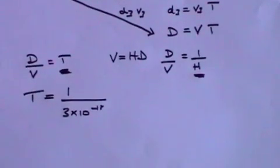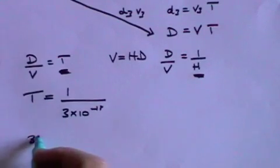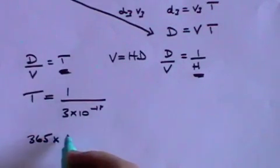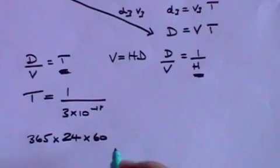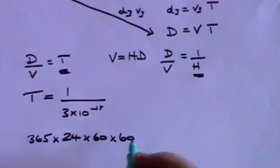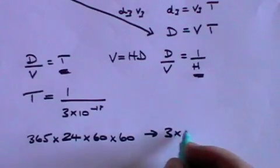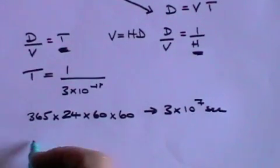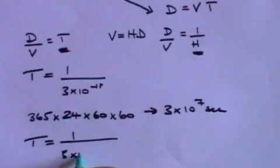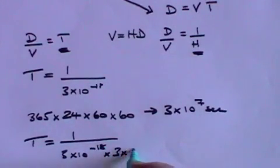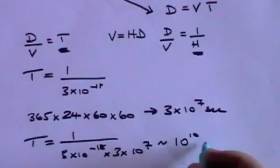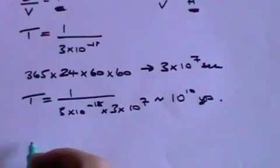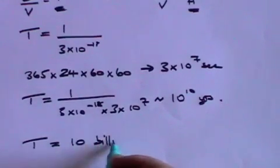How many seconds are there in a year? Well there are 365 times 24 hours times 60 minutes times 60 seconds which comes to approximately 3 times 10 to the 7 seconds in a year. So if we want to convert seconds into years we say that T is 1 over 3 times 10 to the minus 18 times 3 times 10 to the 7, and that very roughly comes to 10 to the 10 years or T equals 10 billion years.